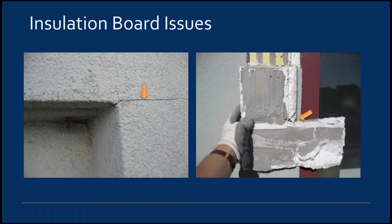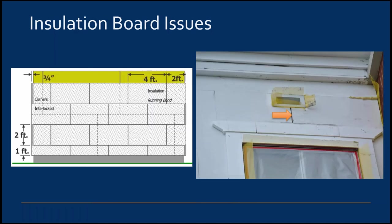The placement of insulation boards is critical to avoid cracking. Stresses at square corners of openings such as windows and doors, and at inside and outside corners, can be five to ten times higher than stresses in the field of the wall. It is important not to align board joints with corners — otherwise diagonal cracks will develop. Insulation board joints should also not align with sheathing board joints. Gaps between boards must be filled with insulation; joints greater than a sixteenth of an inch should be filled to prevent cracks from developing in the lamina.